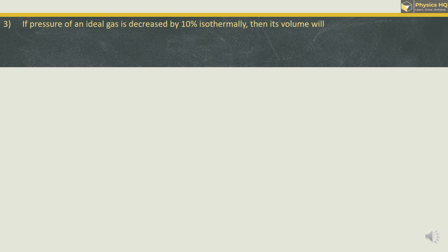If pressure of an ideal gas is decreased by 10% isothermally, then its volume will decrease by 9%, increase by 9%, decrease by 10% or increase by 11.11%. First of all, we will understand what is the meaning of isothermal process. In isothermal process, temperature is kept constant.